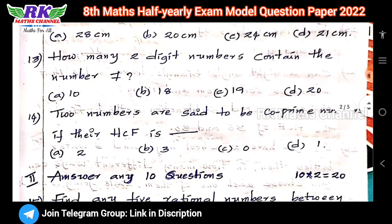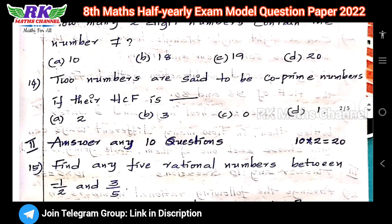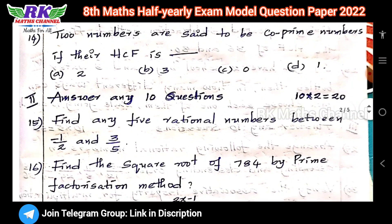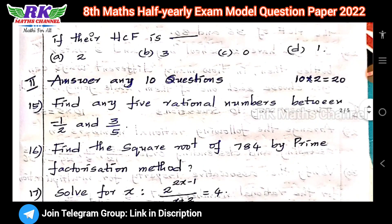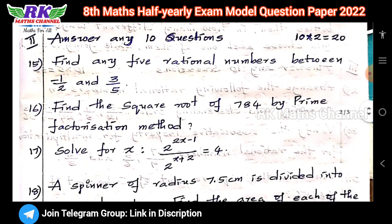There are 14 bits in that section. Next part: answer any 10 questions out of 14 — these are 2-mark questions. 10 questions times 2 marks equals 20 marks.